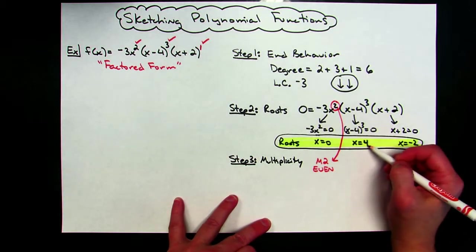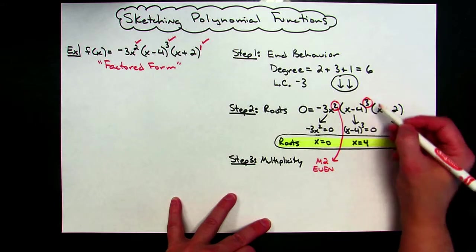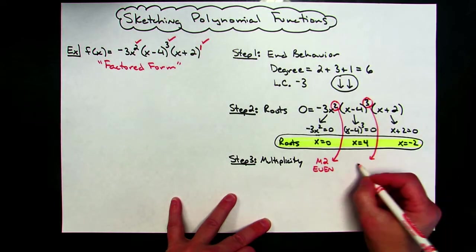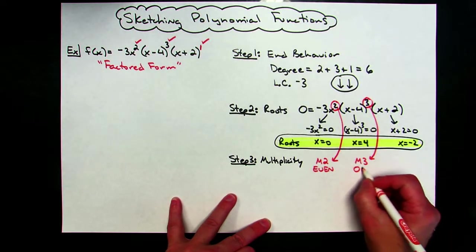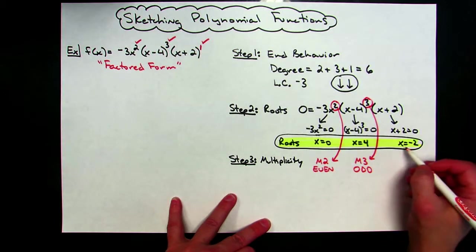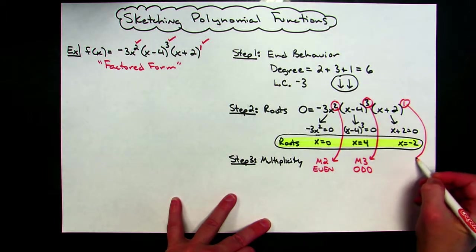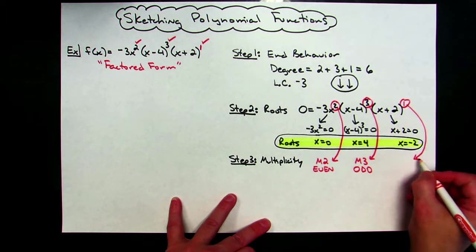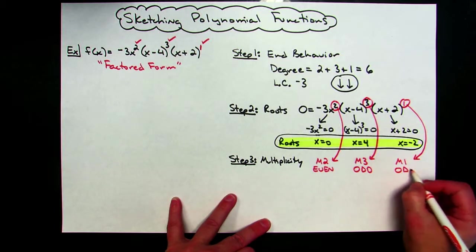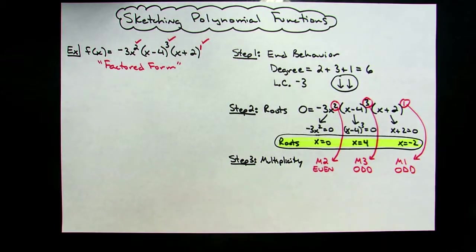For my root at x equals four, my multiplicity is how many times that occurs, so my multiplicity is three. That turns out to be an odd multiplicity. For my last root, x equals negative two, there's the imaginary one that's sitting right there. So my multiplicity for my x equals negative two root is a multiplicity of one, and again, that turns out to be an odd multiplicity.